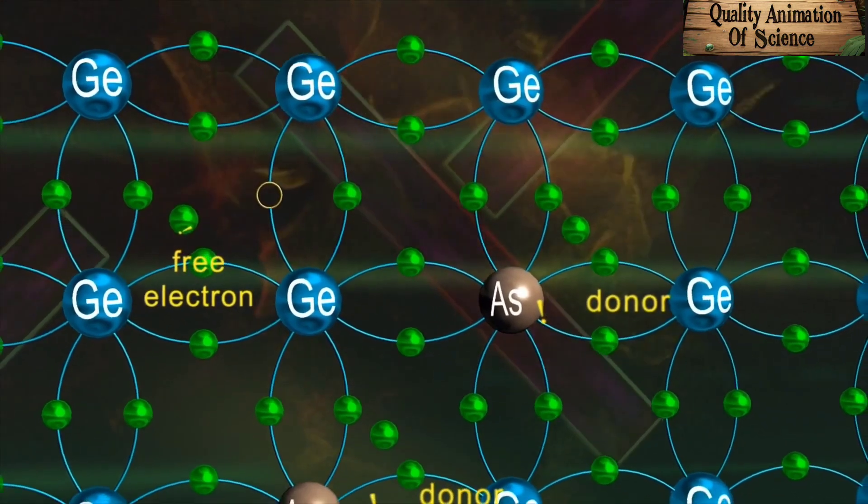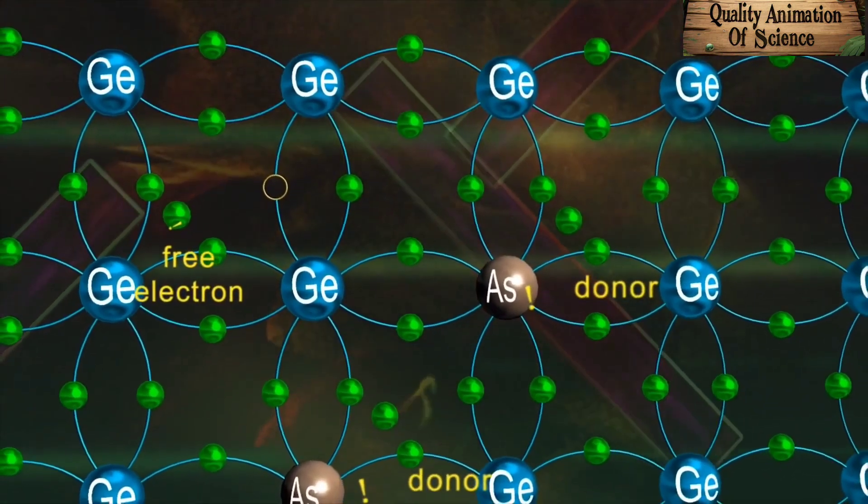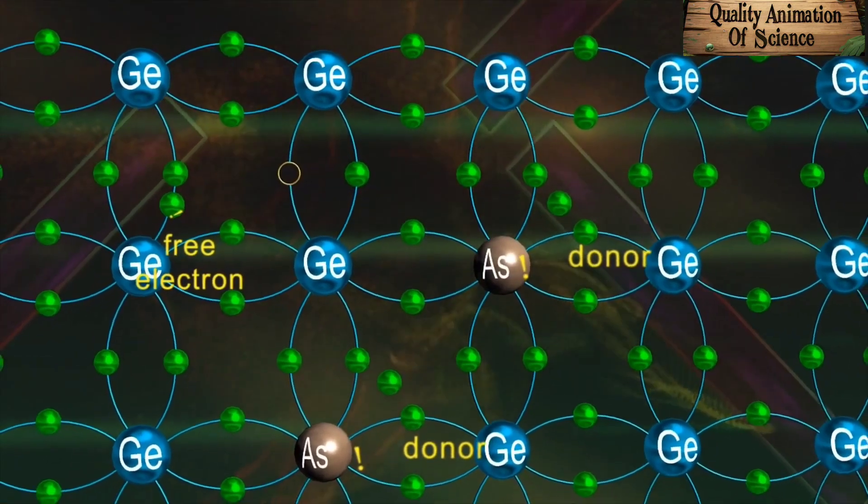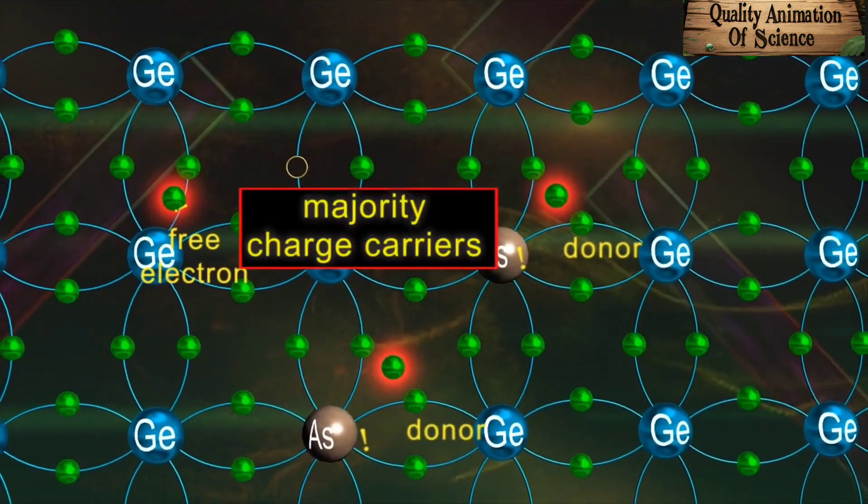Thus, addition of pentavalent impurities to germanium or silicon leads to a mode of conduction in which electrons are majority charge carriers.